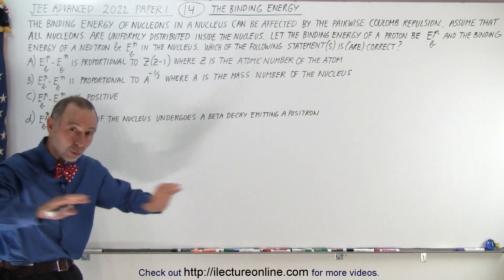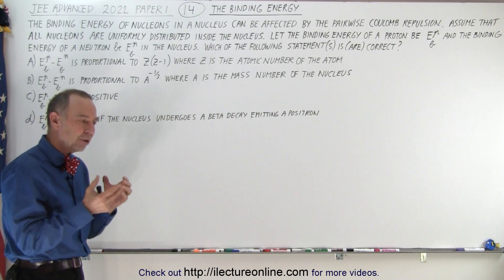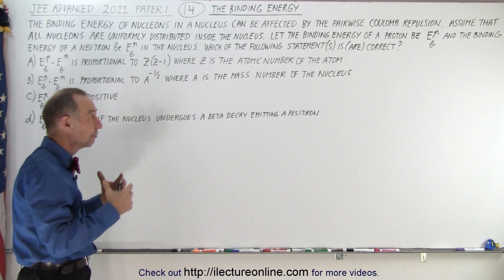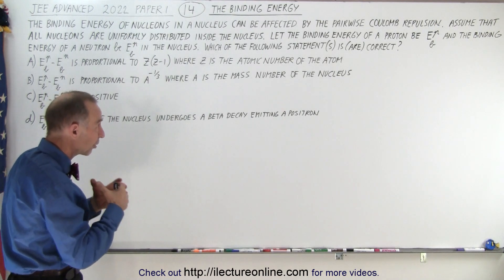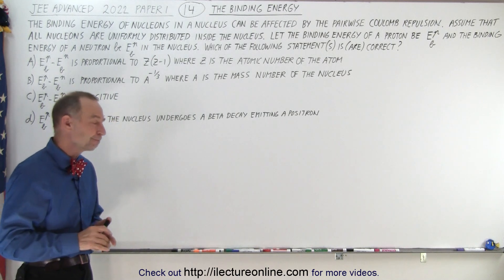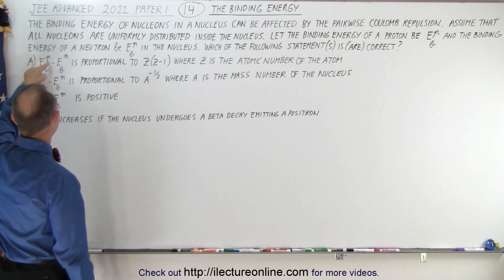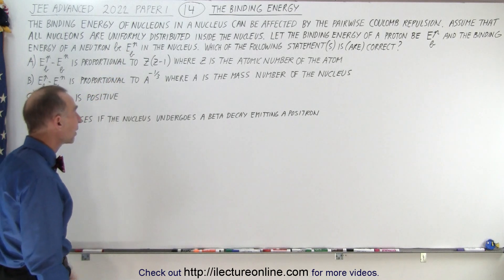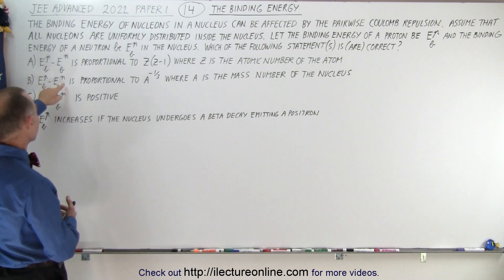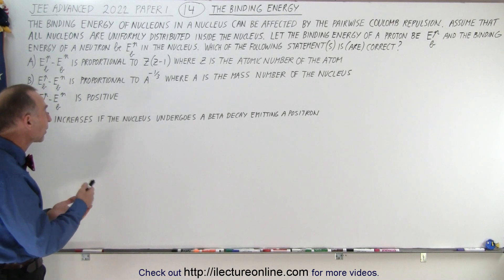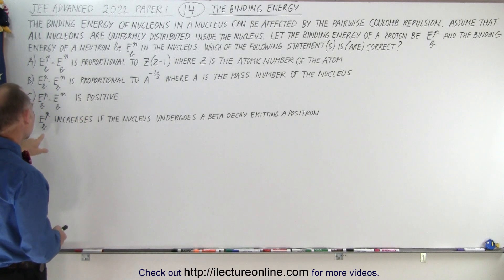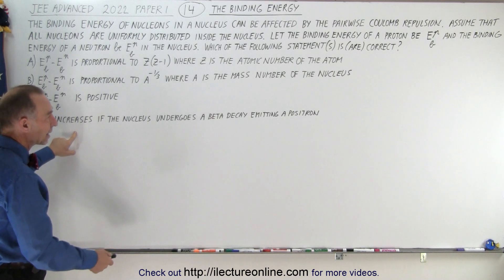The binding energy of a neutron and a proton, if we ignore repulsive forces, are exactly the same. But because protons repel each other, the more protons you have in the nucleus, the more the repulsive forces will fight back against the binding energy — the strong nuclear forces. Now they give us four statements: A says the difference between the average binding energy of a proton and neutron is proportional to Z(Z-1); B says it's proportional to A to the minus one-third; C says the difference is positive; and D says the binding energy of a proton increases if the nucleus undergoes beta decay emitting a positron.